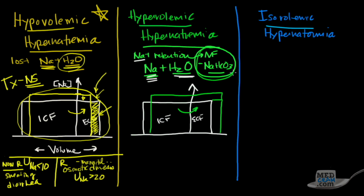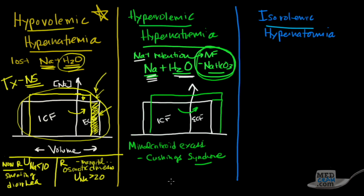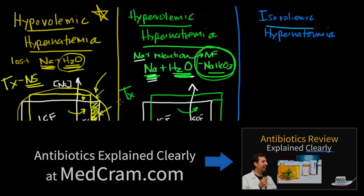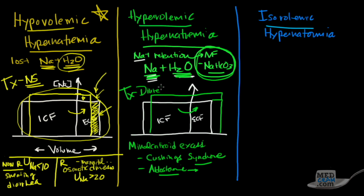Another cause of hypervolemic hypernatremia is mineralocorticoid excess, seen in conditions like Cushing syndrome. In the zona glomerulosa of the adrenal cortex, aldosterone causes sodium reabsorption and potassium excretion in the distal convoluted tubule. Excessive mineralocorticoid secretion can cause elevated sodium in exactly this state. Treatment: diuretics that cause salt wasting, plus giving free water.